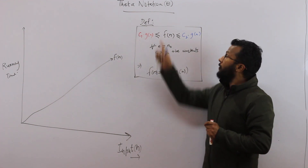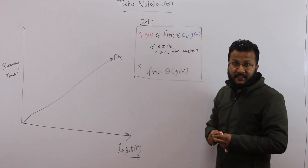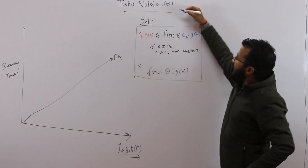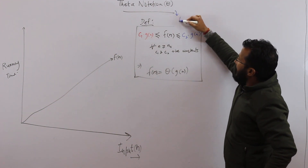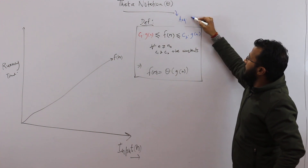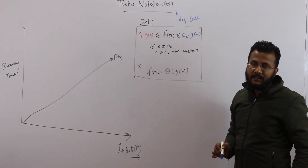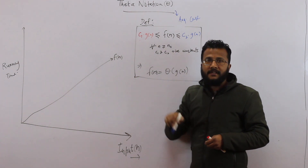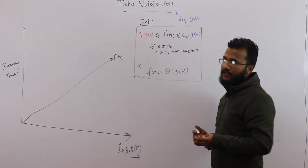Now let's talk about theta notation, which is represented by theta. Theta represents the average case complexity — both space and time. Big-O represents the worst case, Omega represents the best case, and theta represents the average case.